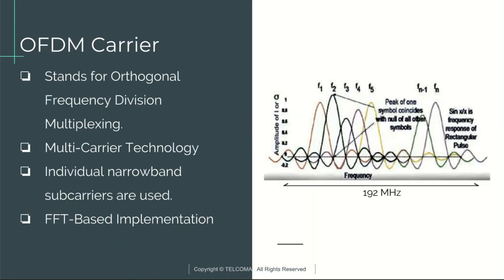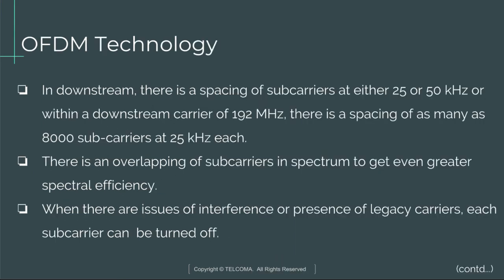OFDM stands for Orthogonal Frequency Division Multiplexing. It uses multi-carrier technology with individual narrowband sub-carriers and an FFT-based implementation. In the downstream, sub-carriers are spaced at either 25 or 50 kHz. Within a downstream carrier of 192 MHz, there can be as many as 8,000 sub-carriers spaced at 25 kHz each.